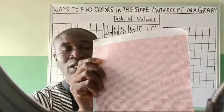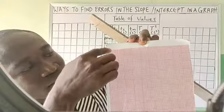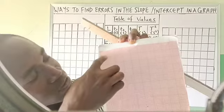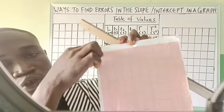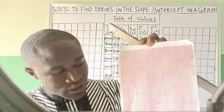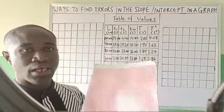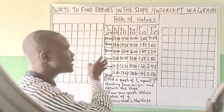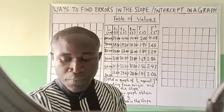This is a standard graph sheet and it is measured in 2cm. That big box you are seeing is 2cm. If you merge two, it becomes 4cm. If you merge three, it becomes 6cm. But if we are to use this graph sheet as it is on this board, you may not be able to see the spaces clearly. So we just have to use a sketch of the graph sheet so that we understand what we are doing very well.